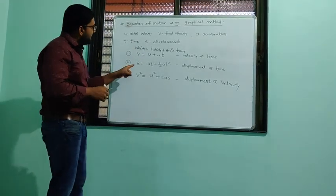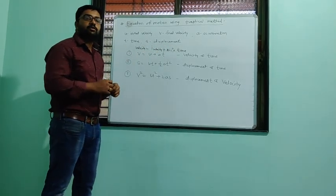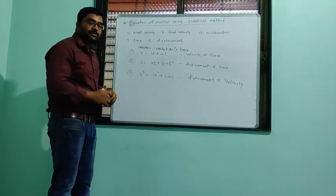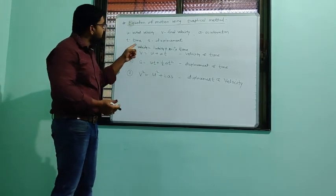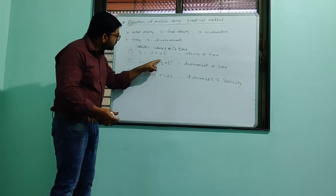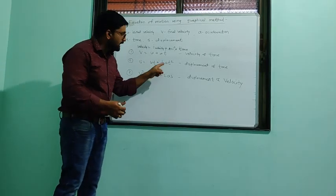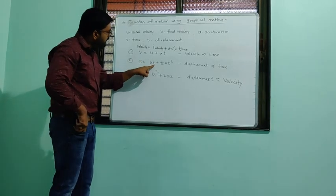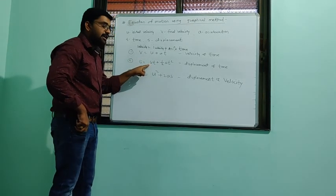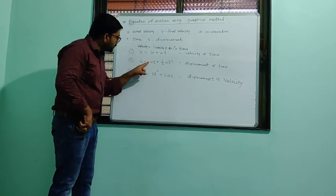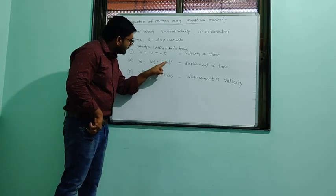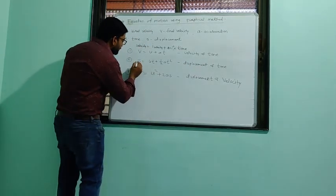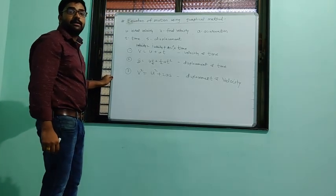The second equation gives displacement produced in an object after time T. S = UT + ½AT², where U is initial velocity, T is time, and A is acceleration. This gives the relation between displacement S and time T — that is the second equation of motion.